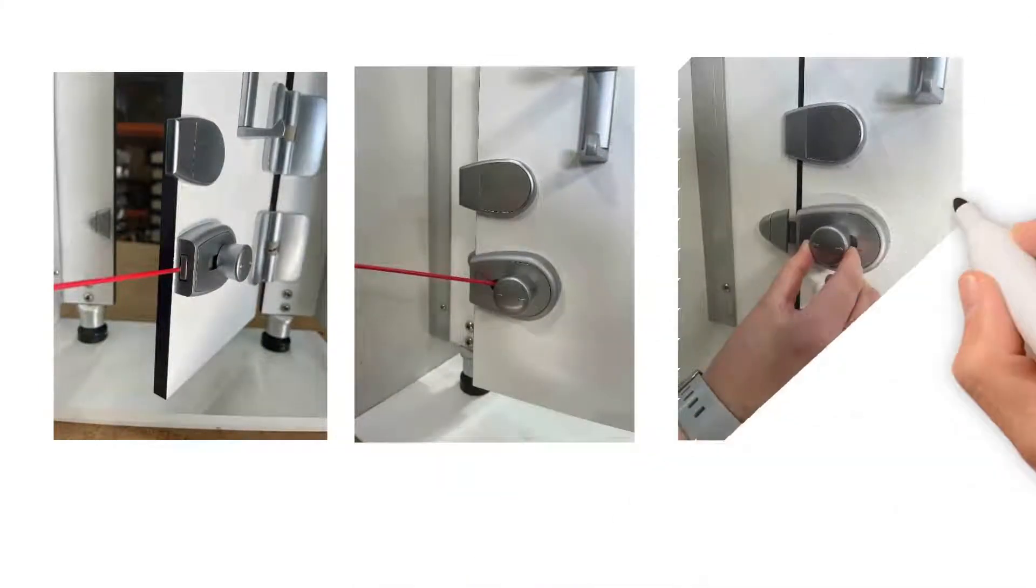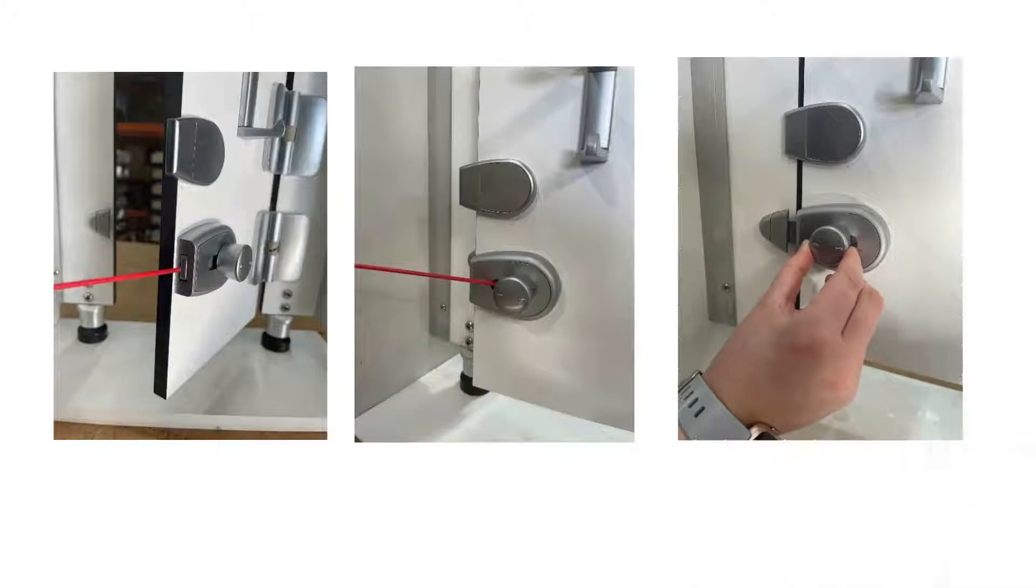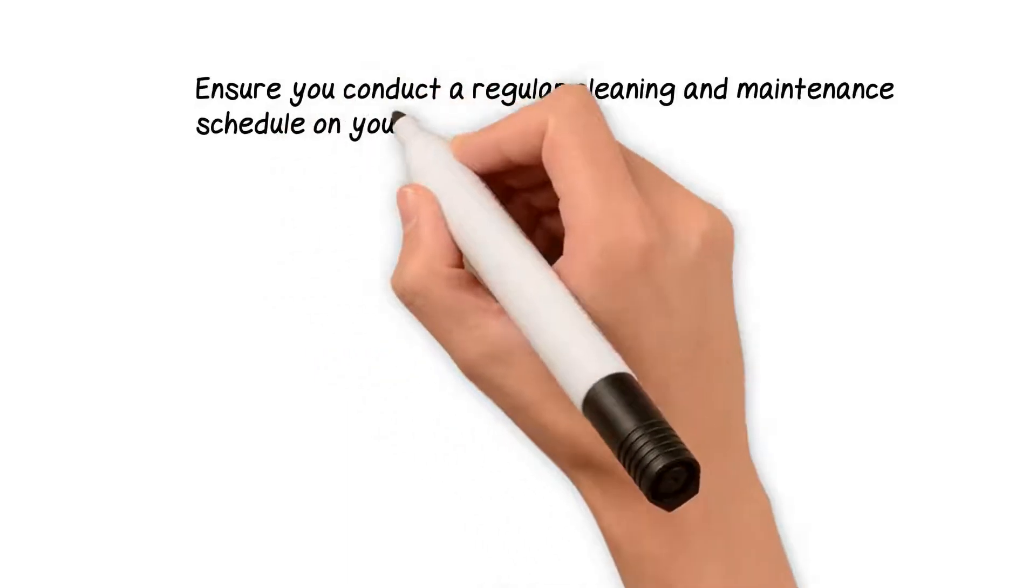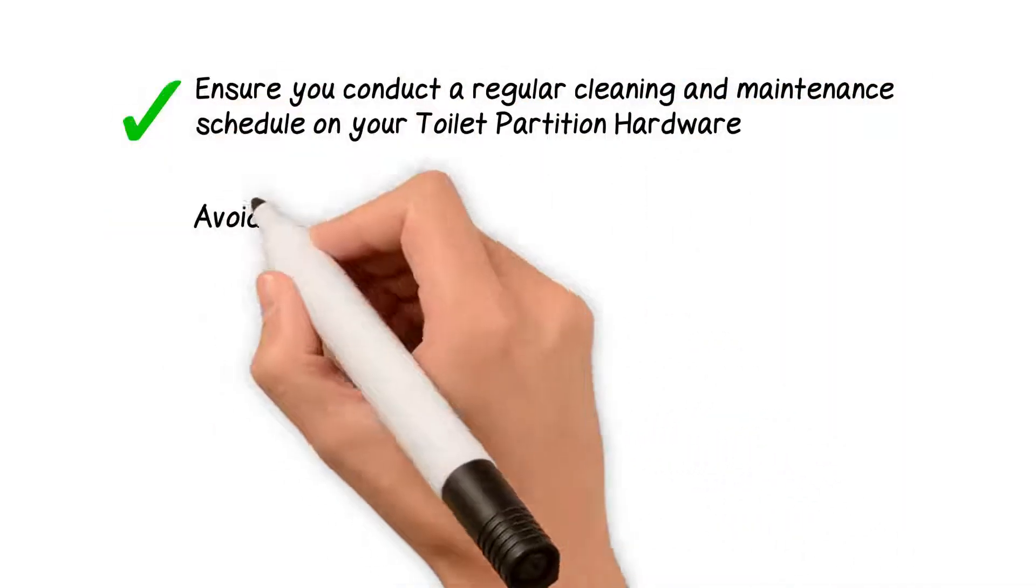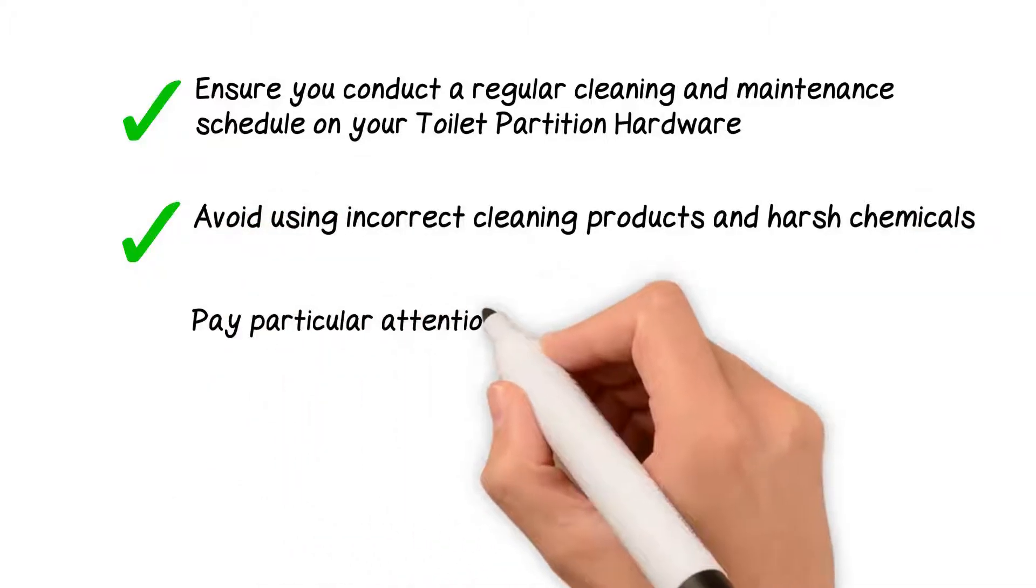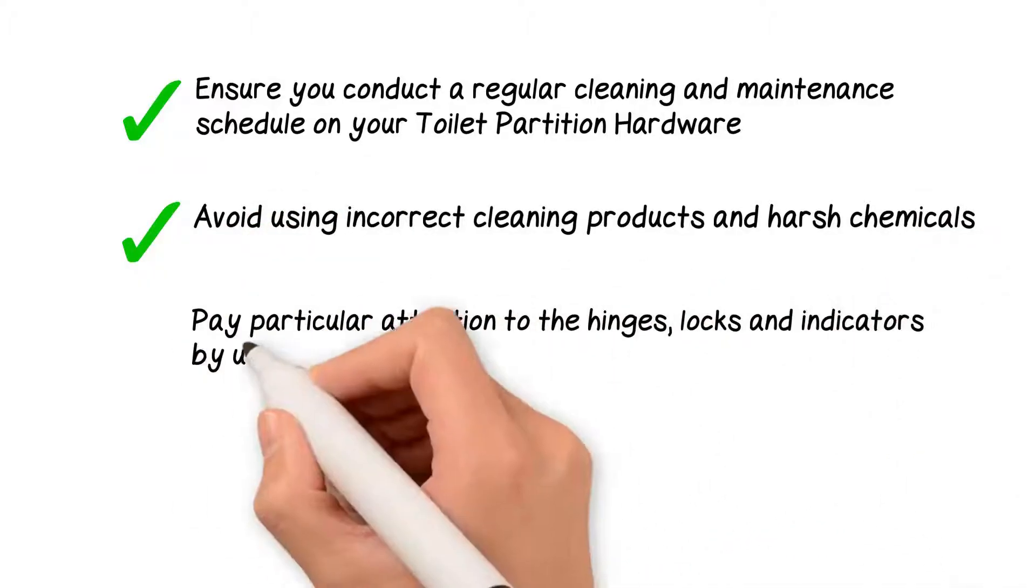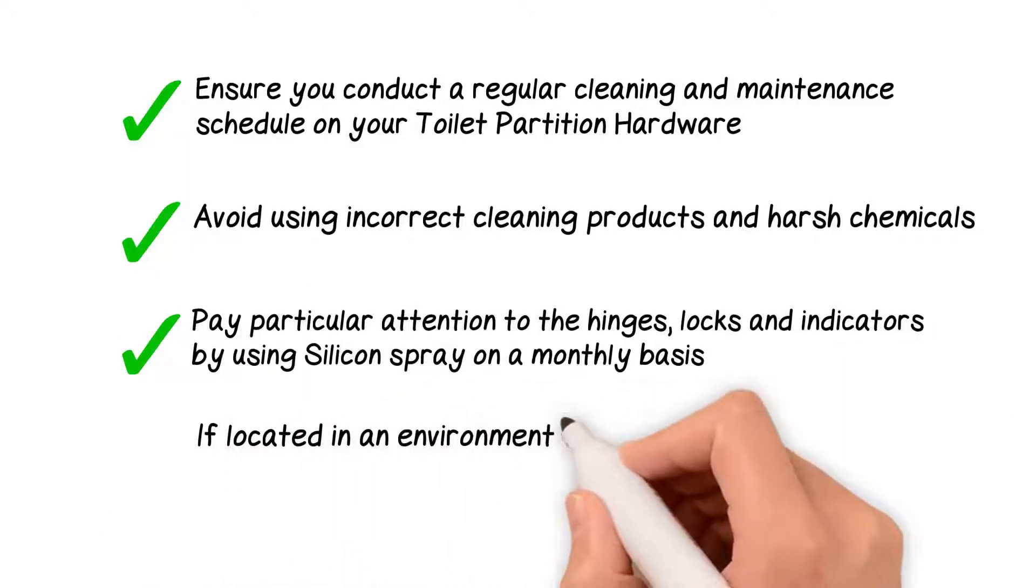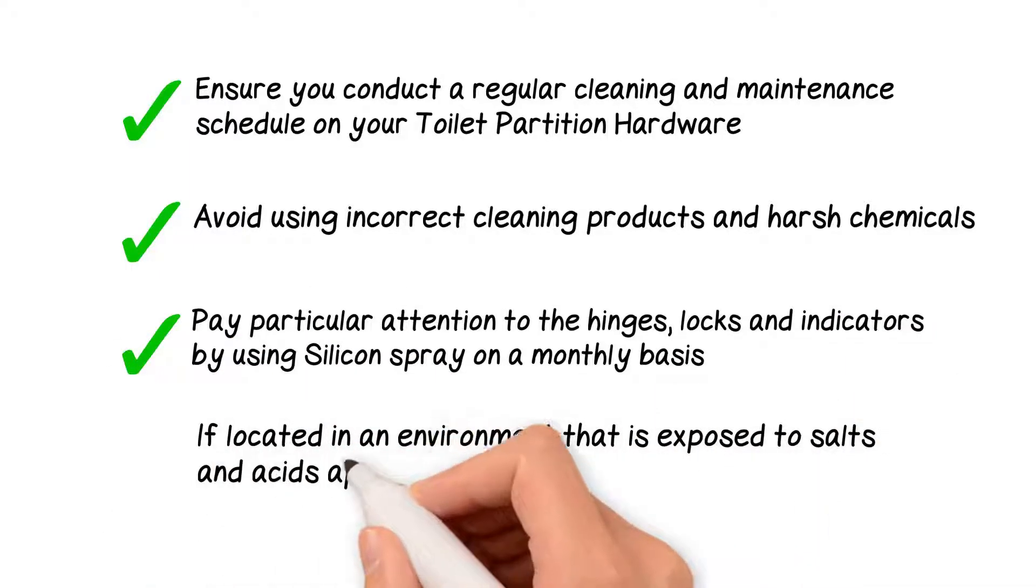So remember, ensure you conduct a regular cleaning and maintenance schedule on your toilet partition hardware. Avoid using incorrect cleaning products and harsh chemicals. Pay particular attention to the hinges, locks, and indicators by using silicon spray on a monthly basis. If located in an environment that is exposed to salts and acids, apply regular hygiene measures.